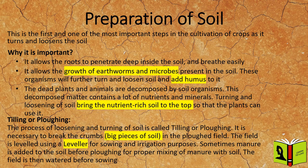Tilling, or plowing. The process of loosening and turning of soil is called tilling, or plowing. It is necessary to break the crumbs in the plowed field. The field is leveled using a leveler for sowing and irrigation purposes. Sometimes manure is added to the soil before plowing for proper mixing of manure with soil. The field is then watered before sowing.